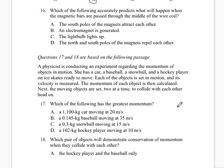Which of the following accurately predicts what will happen when the magnetic bar is passed through the middle of the wire coil? The correct answer is letter C: the light bulb lights up because the movement of the magnet through the wire coil causes an electric current to be produced, and therefore the electric bulb will light up.